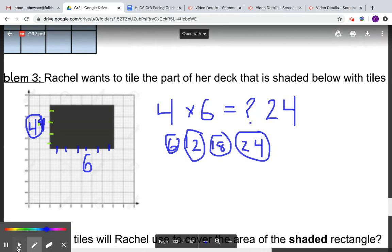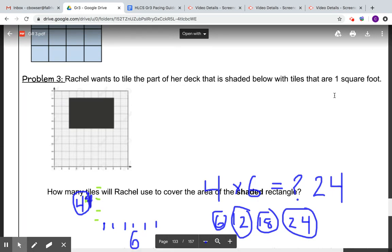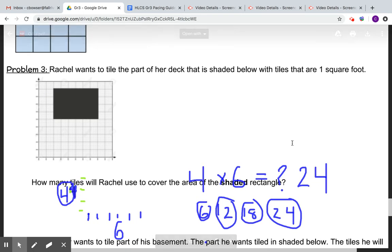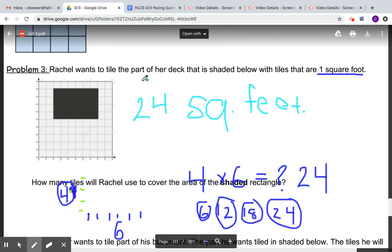The question is asking us how many tiles will she use to cover the area, and it says one square foot. So I know that my answer needs to have that unit, so my final answer would be 24 square feet. You could write a full sentence: Rachel needs 24 square feet.